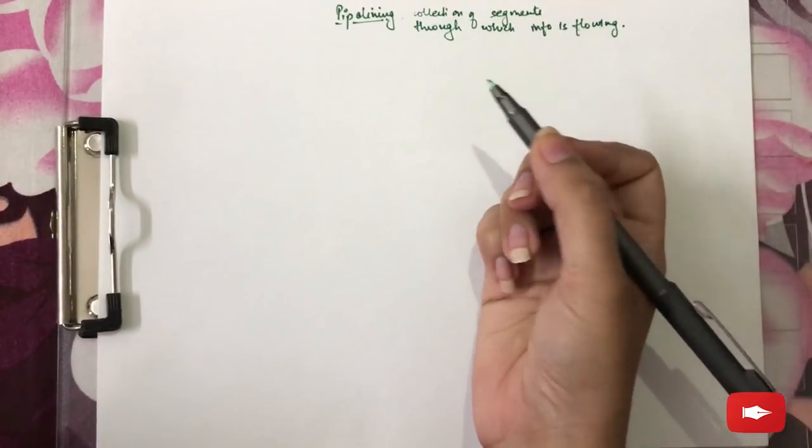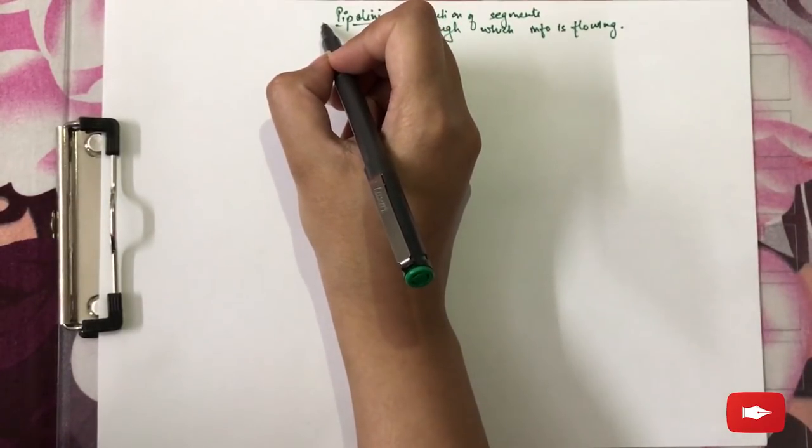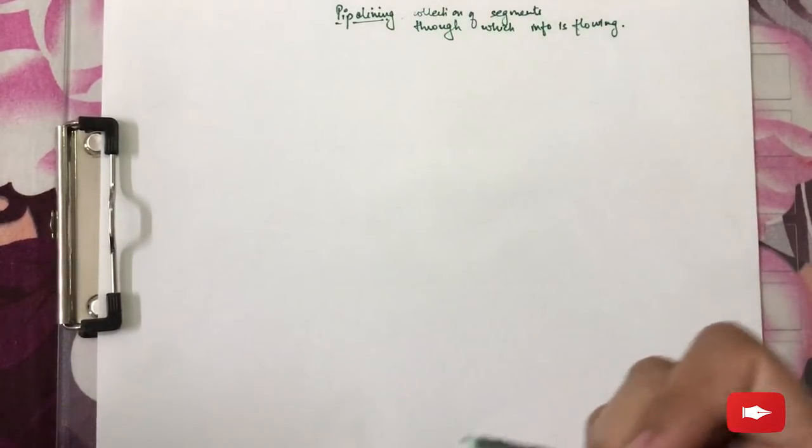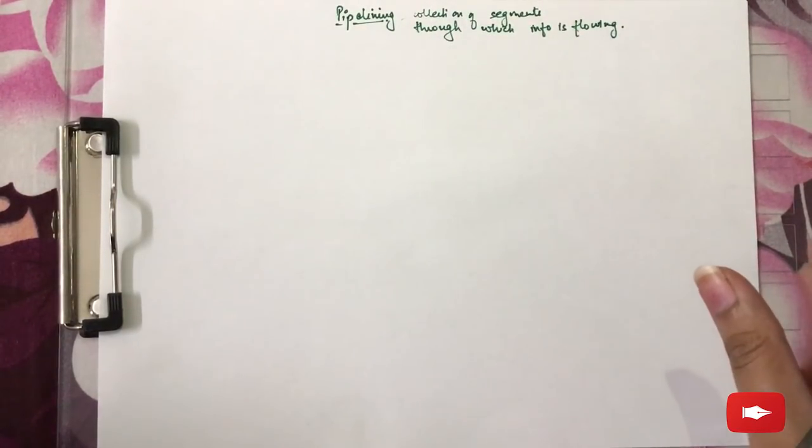Still, what is pipelining? Pipelining is a process. It is basically decomposing a process into sub-operations with each sub-operation being executed in a segment and multiple segments operating concurrently.